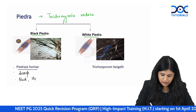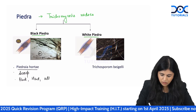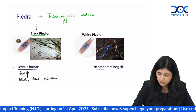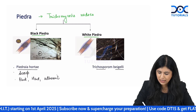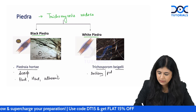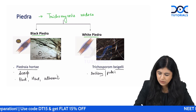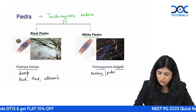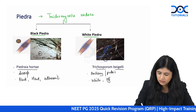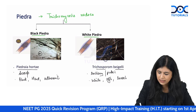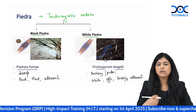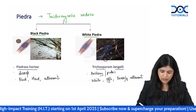White piedra is caused by Trichosporon beigelii and is commonly seen on axillary and pubic hair, sometimes on eyelashes. The concretions are white in color, soft to touch, and loosely adherent on the hair shaft. Treatment is best done by shaving the hair; if shaving is not possible, antifungals are used.